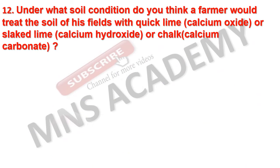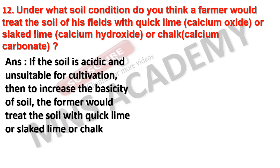Under what soil condition would a farmer treat the soil with quick lime (calcium oxide), slaked lime (calcium hydroxide), or chalk (calcium carbonate)? If the soil is acidic and unsuitable for cultivation, then to increase the basicity of the soil, the farmer would treat it with quick lime, slaked lime, or chalk.